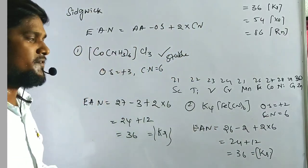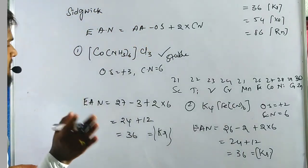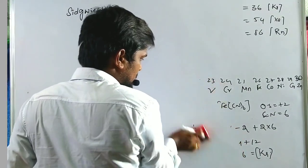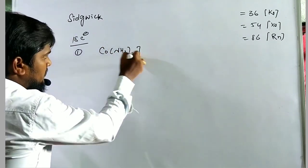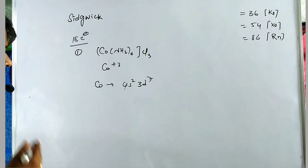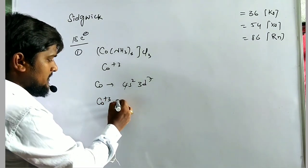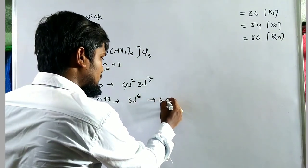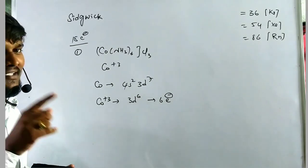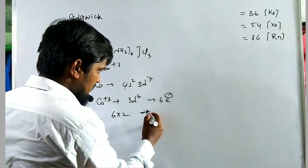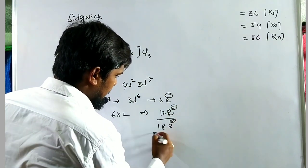The stability of these complexes can also be explained using the 18-electron rule, which requires a completely filled outermost shell of electrons. For [Co(NH3)6]Cl3: cobalt's electron configuration is 4s², 3d⁷. In the +3 oxidation state, 2 electrons are lost from 4s and 1 from 3d, giving 3d⁶ — that is 6 electrons. Each of the 6 ammonia ligands donates 2 electrons, giving 12 electrons. Total = 6 + 12 = 18 electrons. Therefore, this complex is stable.